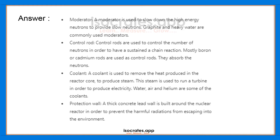Mostly boron or cadmium rods are used as control rods because they absorb neutrons. The next component is the coolant. A coolant is used to remove the heat produced in the reactor in order to produce steam, and this steam is used to run a turbine to produce electricity. Water, air, and helium are some of the coolants used.